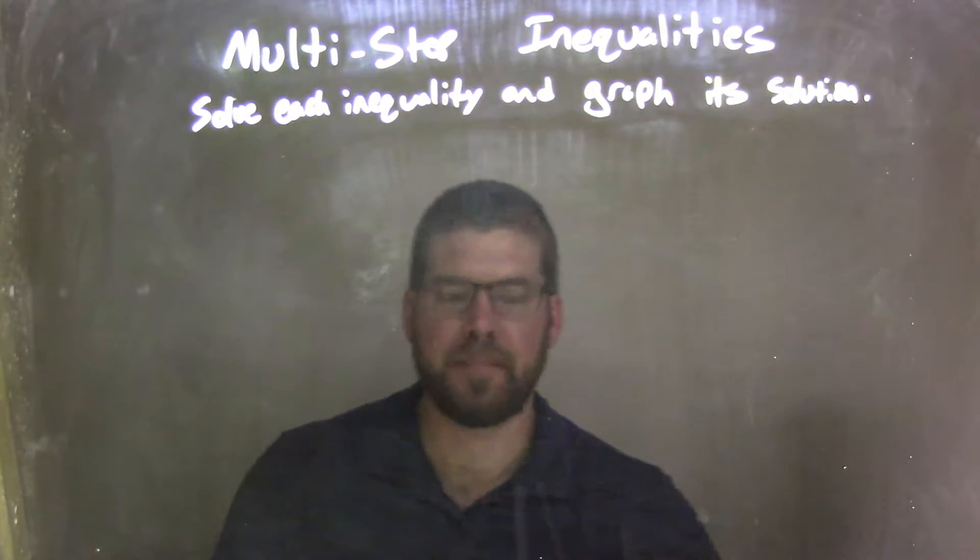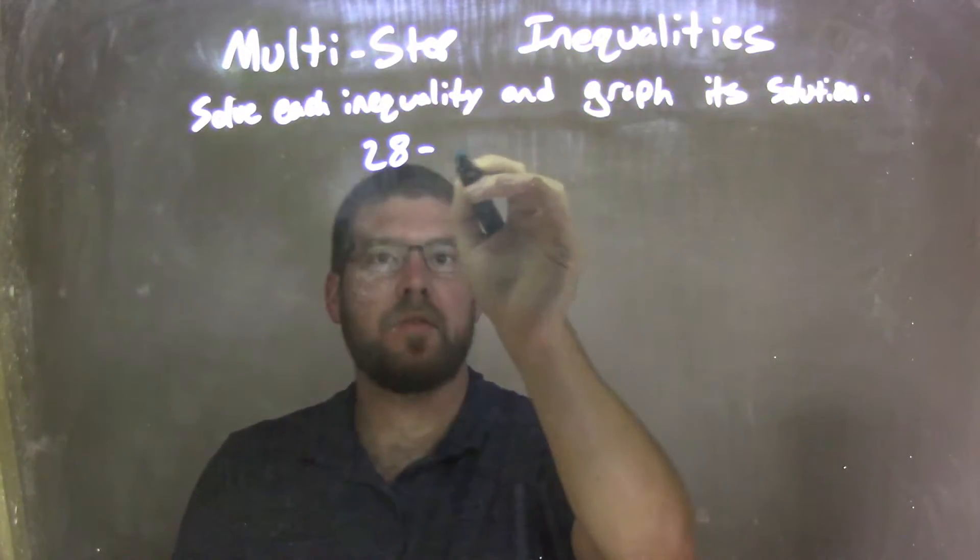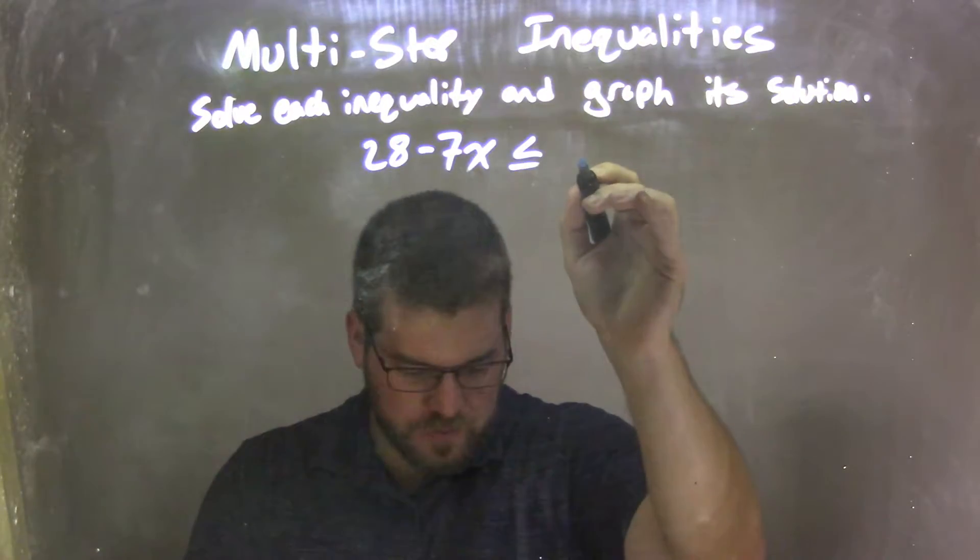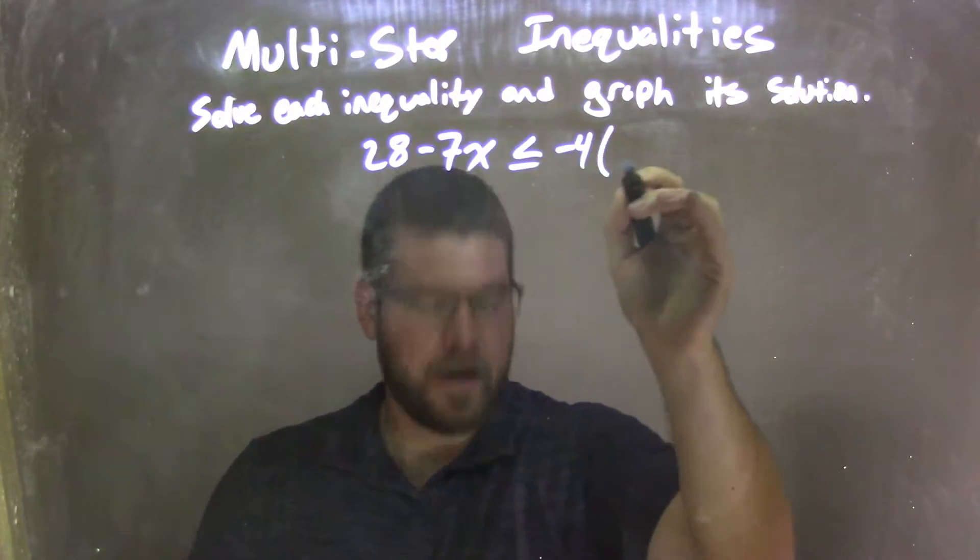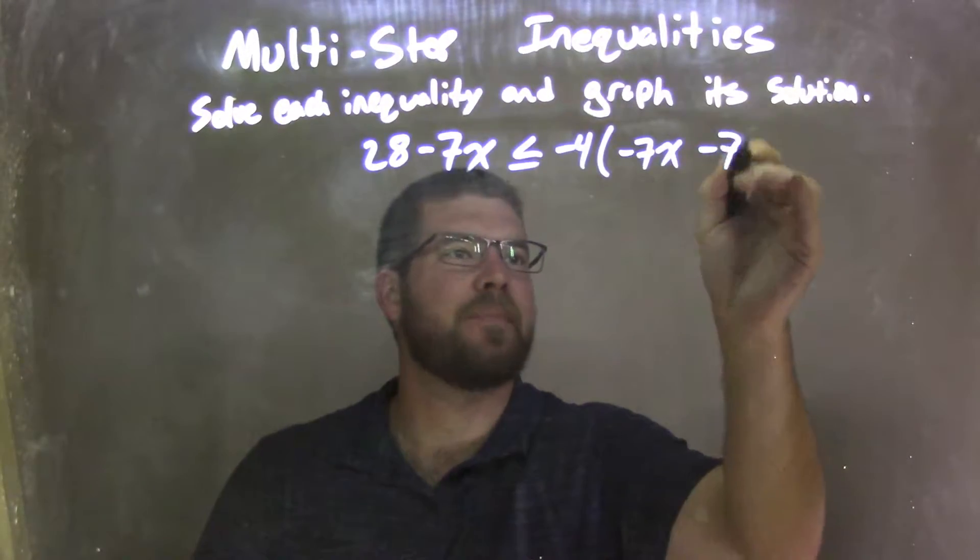So if I was given this inequality, 28 minus 7x is less than or equal to negative 4 times parentheses negative 7x minus 7.